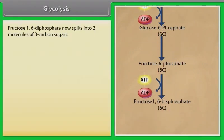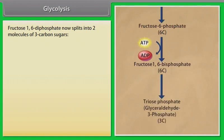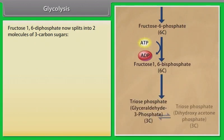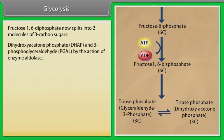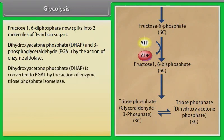Fructose-1,6-diphosphate now splits into two molecules of three-carbon sugars: dihydroxyacetone phosphate (DHAP) and 3-phosphoglyceraldehyde (PGAL) by the action of enzyme aldolase. Dihydroxyacetone phosphate (DHAP) is then converted to PGAL by the action of enzyme triose phosphate isomerase.